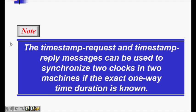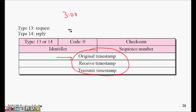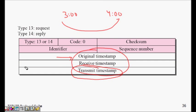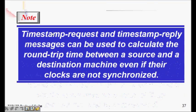The three timestamp fields are: original timestamp, receive timestamp, and transmit timestamp. For example, the original timestamp is what I send in the request — say three o'clock at my side. The receive timestamp is what the other party records when it receives the request. The transmit timestamp is when the other party sends the reply. Calculating the round trip time from these fields is left as a homework exercise.